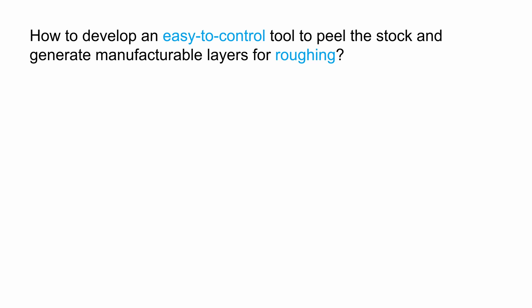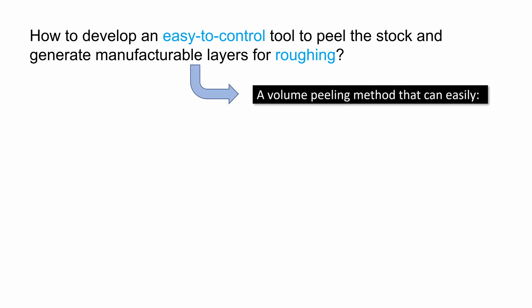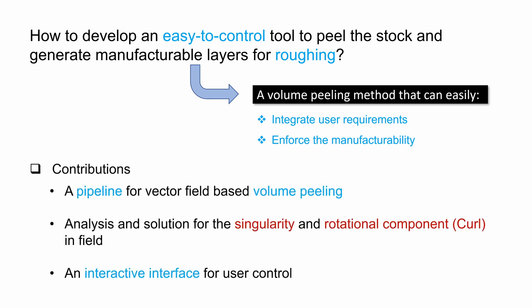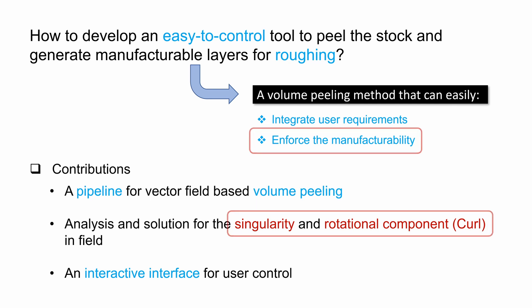In this work, we show a method to generate the layers for roughing which can easily integrate user requirements as well as ensure manufacturability. Vector-field-based methods have many advantages in interactive graphics systems, so we introduce it in the layer generation pipeline. To manufacture a product using layers generated from vector fields, some properties of the field need to be controlled.